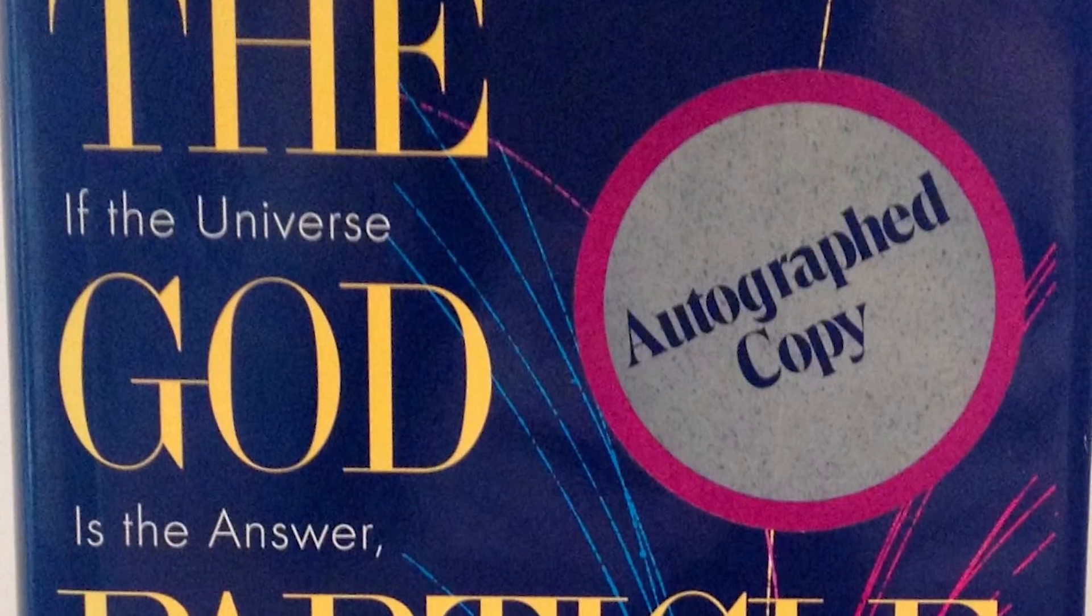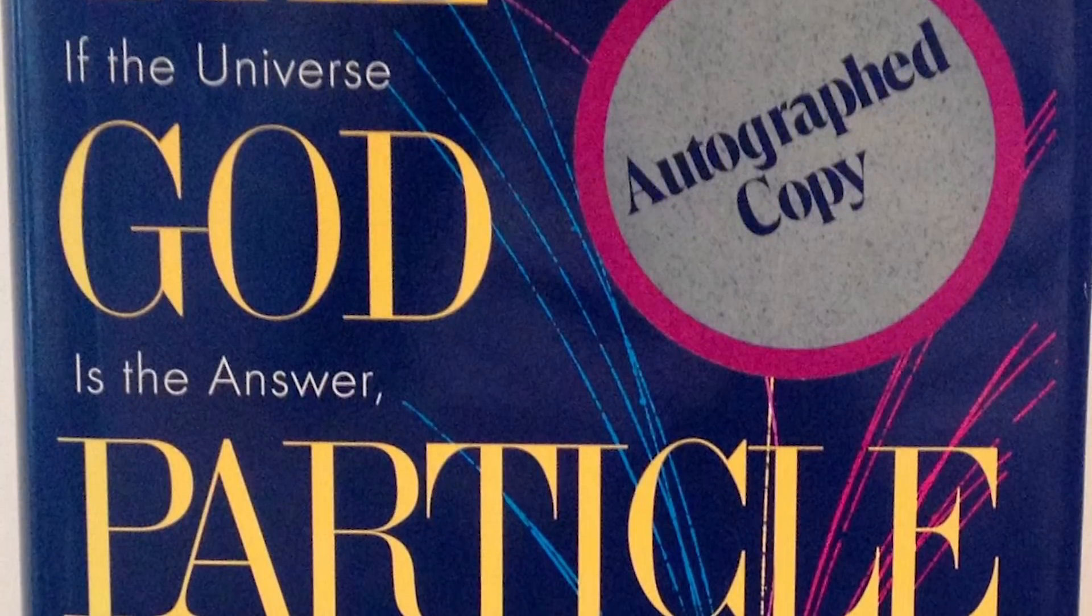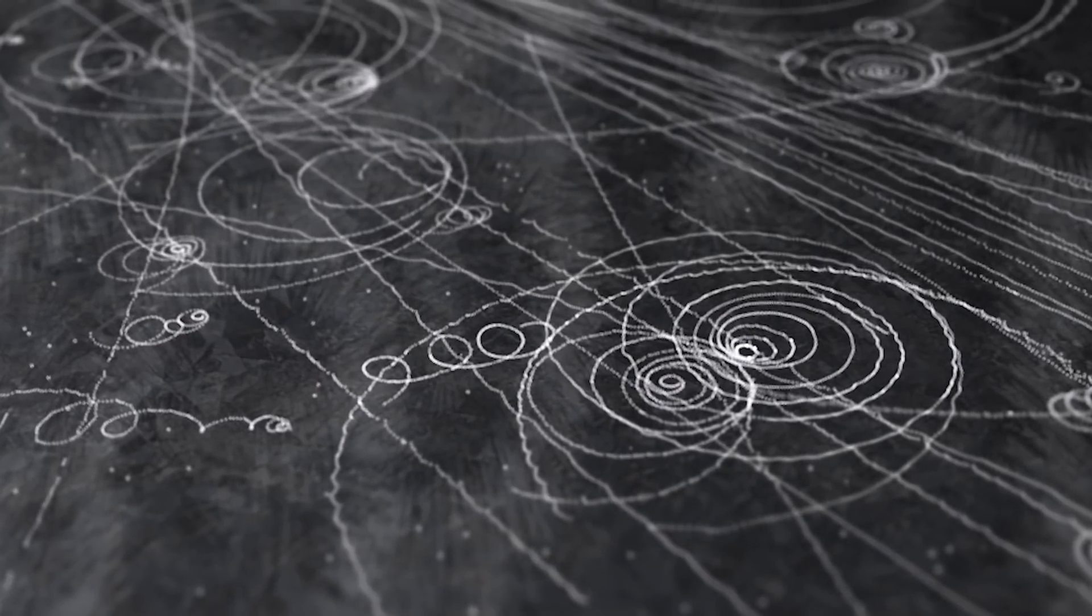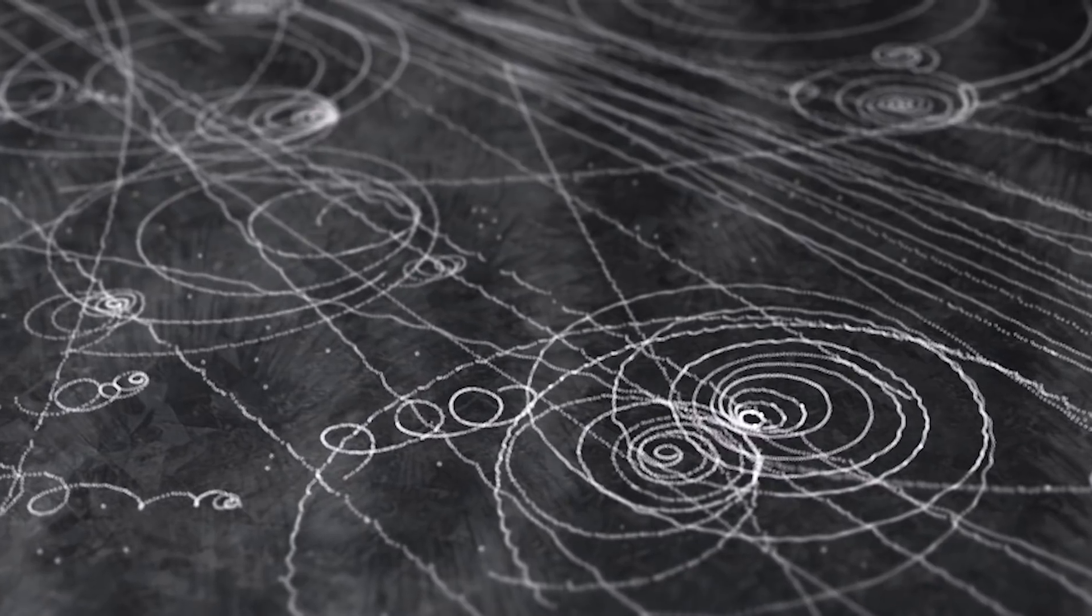The term God particle was coined around the 1990s by Leon Lederman, a physicist and Nobel laureate who published a book about particle physics and discussed science's pursuit to discover a specific elementary particle referred to as the Higgs boson. Actually, many scientists dislike the title of God particle and would prefer to use the official term Higgs boson. But again, what is it exactly and why is it so important in proving the existence of Higgs field and evaluating the Standard Model?